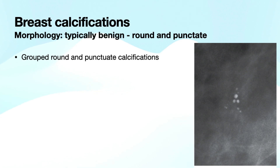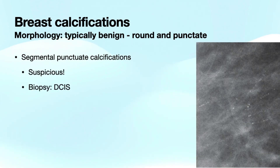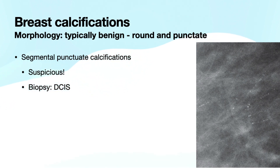Here we have an example of grouped round and punctate calcifications. You can see the larger ones called round centrally, and the smaller more faint calcifications on the periphery would be called punctate. This next example shows diffuse punctate calcifications on the left CC view — very faint punctate calcifications scattered throughout the breast parenchyma all the way to the lateral and medial margins. Juxtaposed to this is a slide of segmental punctate calcifications, which should be given a BI-RADS 4 suspicious assessment. This was biopsied and yielded DCIS. So despite the typically benign morphology, in this instance the suspicious distribution trumped that and got us to the correct answer.